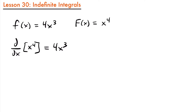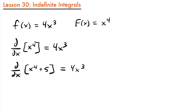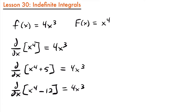Now watch what happens if we take the derivative of a function like d/dx of x to the fourth power plus 5. The derivative of x to the fourth power is still 4x cubed, and the derivative of 5, a constant, is 0. So we're just left with 4x cubed again. Similarly, d/dx of x to the fourth power minus 12 also gives us 4x cubed, since the derivative of negative 12 is also 0. We could keep adding or subtracting more and more constants from x to the fourth power and still get the derivative 4x cubed.